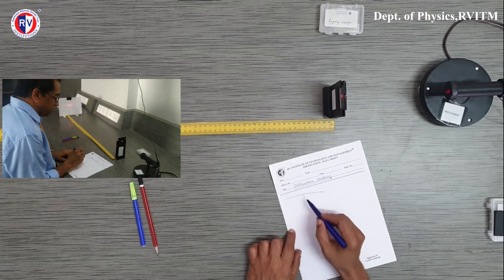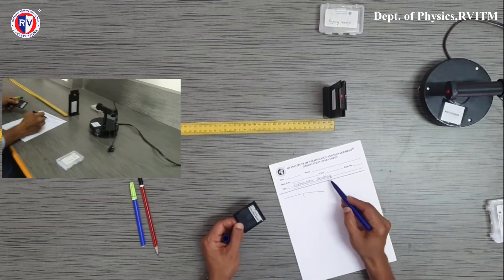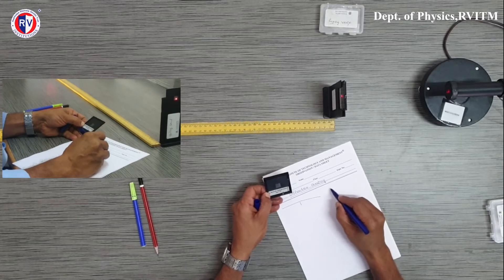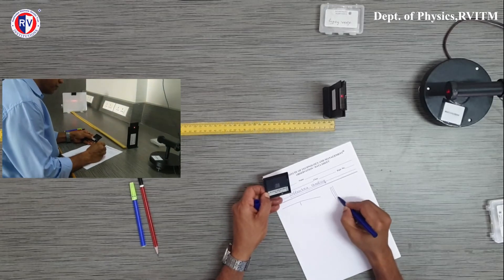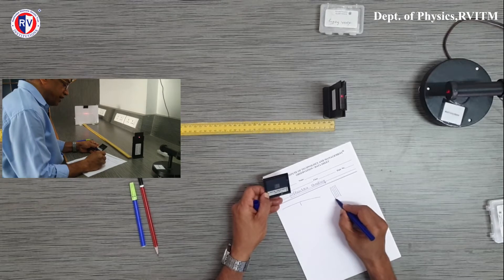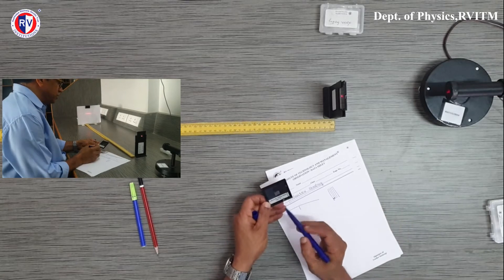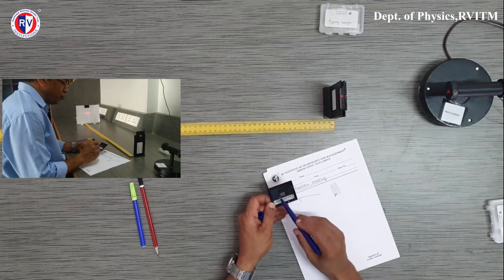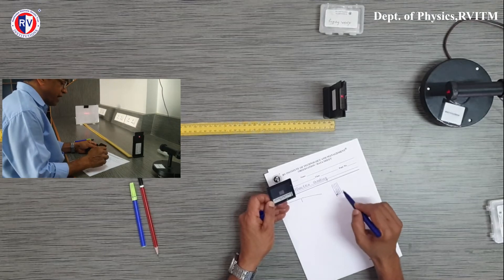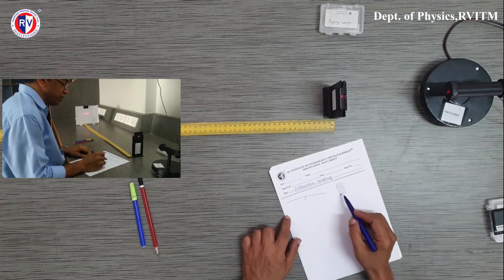For diffraction, we need a device — a slit or an obstacle. In our case, we are using a grating as the device for diffraction. On the grating sheet, there are a large number of lines on the glass sheet. These lines are opaque regions and the spaces between the lines serve as slits. It is written as 500 lines per inch, meaning in one inch of this glass film, 500 lines are drawn. You get a set of parallel equidistant slits — this arrangement is called a grating.